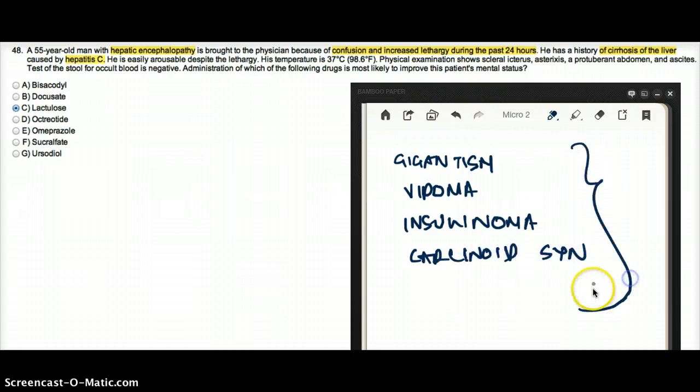So you get the idea. Whenever we need somatostatin or somatostatin analog is going to do the job and decrease gigantism, decrease vipoma, decrease insulinoma and decrease carcinoid syndrome. So that's octreotide.